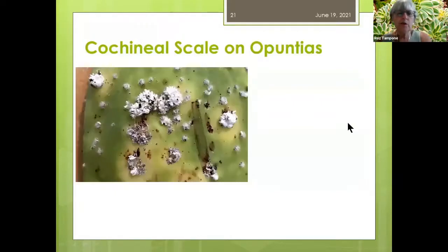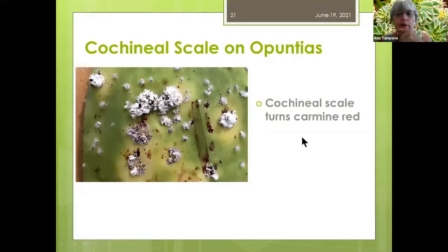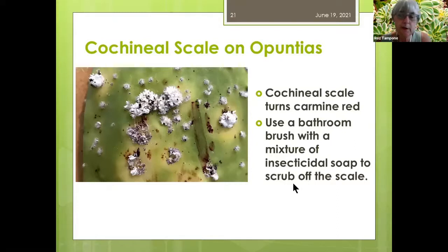This is one you'll find on cactus — it's called cochineal scale. You can see the scales, and if you press one it produces a red dye — it turns carmine red. If you use a bathroom brush with a mixture of insecticidal soap, you can scrub off the scale and try to save your Opuntias. This seems to affect only those Opuntia rabbit ear cacti.